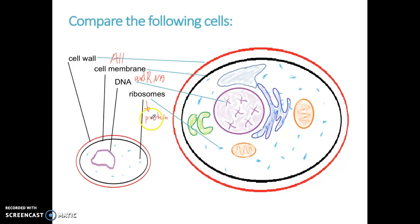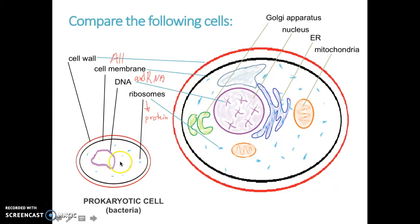Now, some of the things that they do not share in common are some organelles like the Golgi apparatus, the nucleus - very important to remember - ER, which is the endoplasmic reticulum, and also the mitochondria. Even sometimes things like the chloroplasts, which is found in plants, is not going to be found in prokaryotes. So these are prokaryotic cells like bacteria, and these are eukaryotic cells like plants and animal cells.